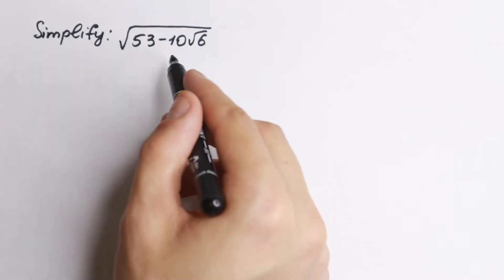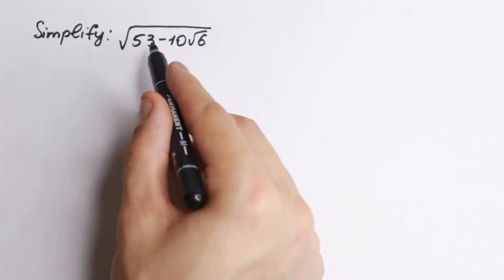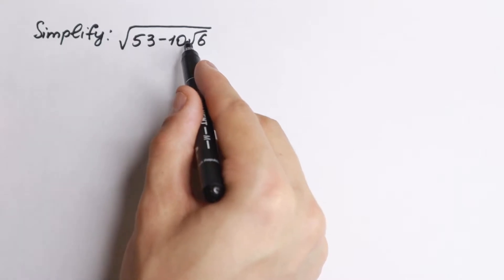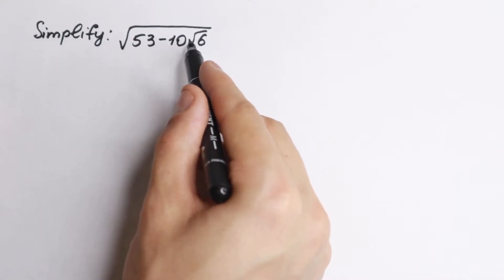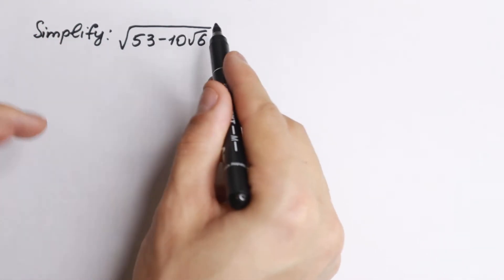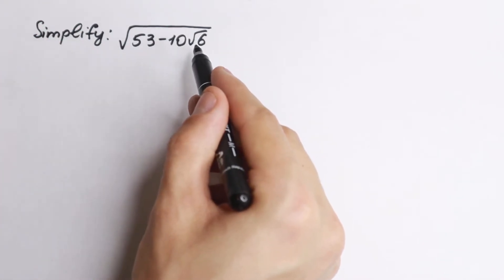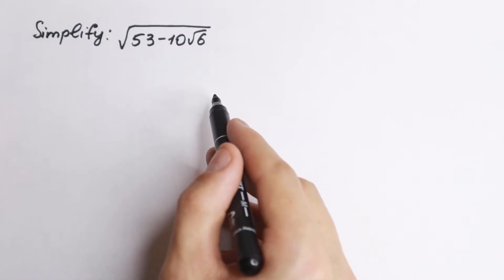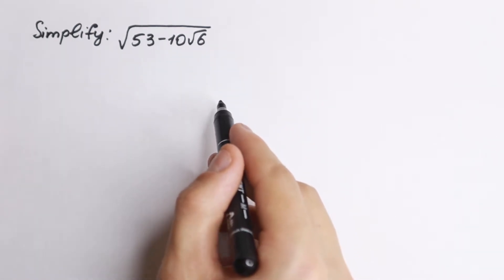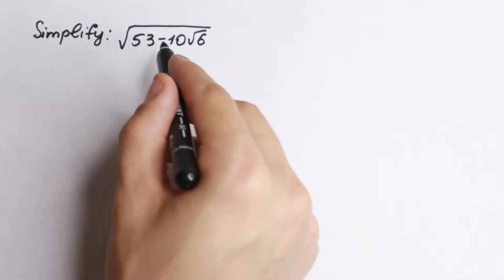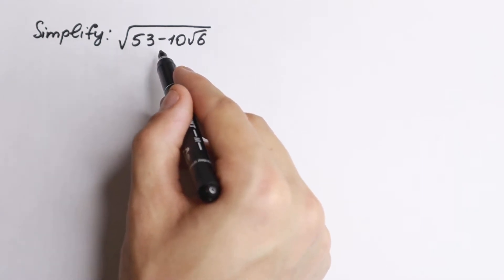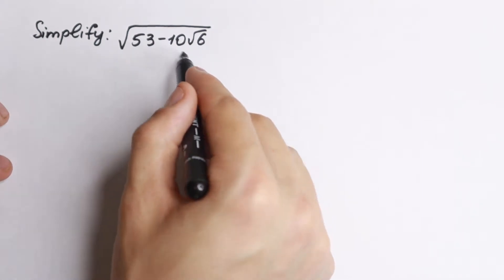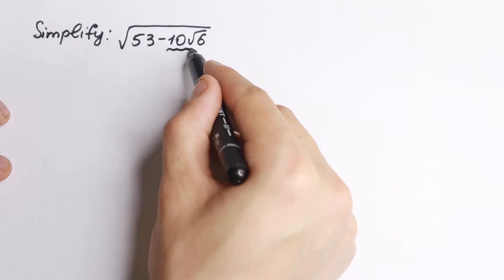At first glance this seems kind of impossible because this is not an even number and we have this 10 square root of 6. But we have the main square root which gives us a little bit of difficulty right here, so I want to show you a really good approach right now. Take a look closely — 53 cannot be divided by 2 or by 3, so we need to work with this 10 square root of 6.